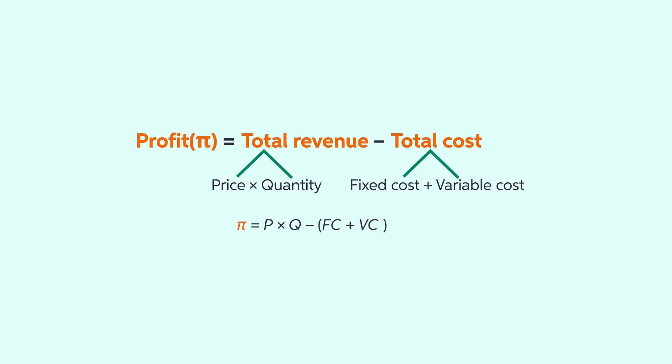Since total revenue equals price times quantity, and total cost is fixed cost plus variable cost, the profit function can be rewritten like this.